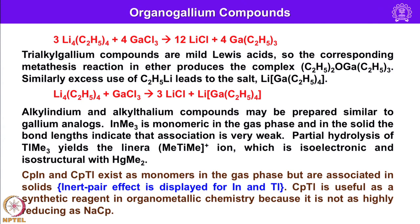Let us look into organogallium compounds. Appropriate alkyl lithium reagents treated with gallium trichloride give trialkyl gallium compounds. These trialkyl gallium compounds are also mild Lewis acids, and a metathesis reaction in ether produces an ether adduct. Excess ethyl lithium leads to a salt of anionic type. For example, taking gallium trichloride and treating with 4 equivalents of ethyl lithium gives 3 equivalents of lithium chloride plus the lithium salt of gallium tetraethyl, Li[GaEt4].